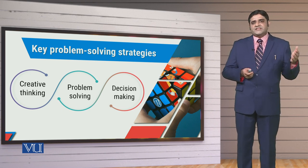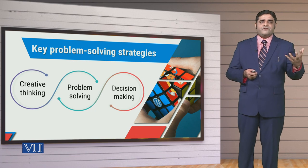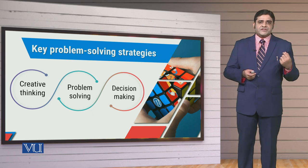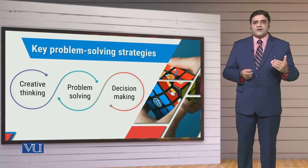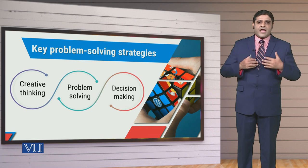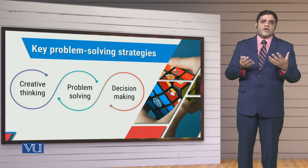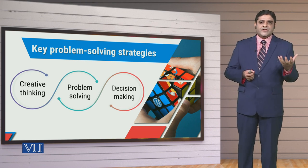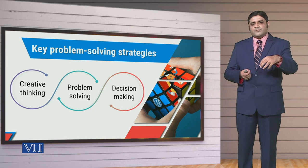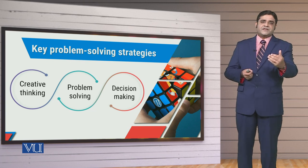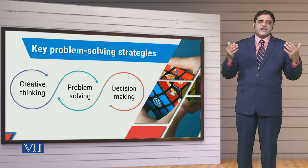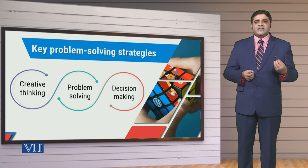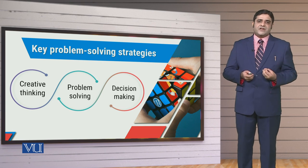So problem solving is a process that actually leads to the destination of a final decision. The third phenomenon is decision making, where you make a decision and then take that decision toward execution and implementation. Starting from creative thinking, moving into problem solving, and then taking the final decision — this is the complete sequence through which we solve our issues, face challenges, and demonstrate creative and innovative outcomes.